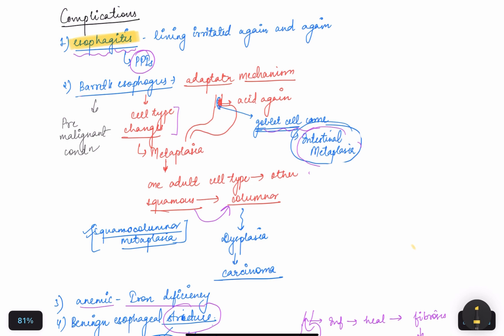Barrett's esophagus is an adaptation mechanism in which one cell type changes into another. The squamous epithelium, which is the normal epithelium of the esophagus, changes into columnar epithelium. This is also called metaplasia, or squamous to columnar metaplasia.